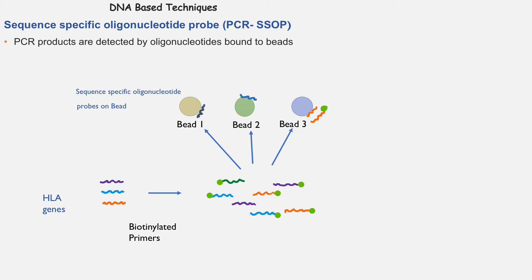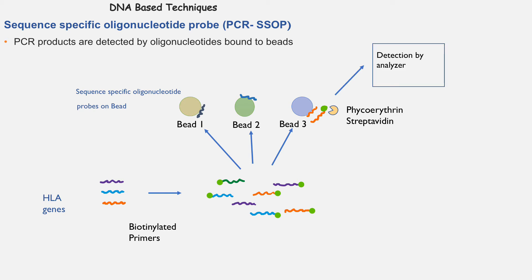Then a tracer molecule, such as a fluorescent molecule, attaches to the biotin molecule. This fluorescence or positive reaction is detected by an analyzer, telling us which beads have a positive reaction. So in this case, an HLA allele with its corresponding oligonucleotide on bead number 3 is identified. We can identify all alleles of a person by this method, with intermediate or high resolution depending on the number of oligonucleotide probes used.